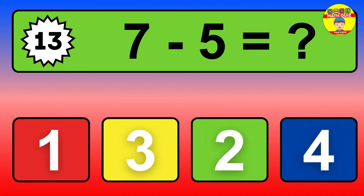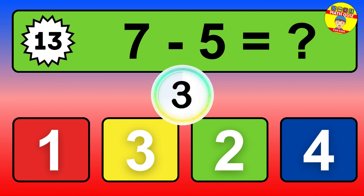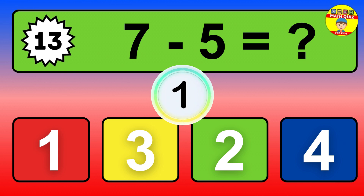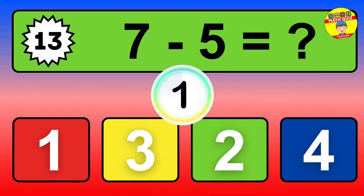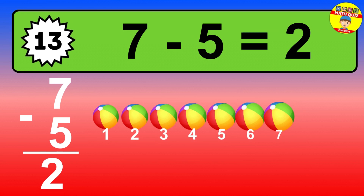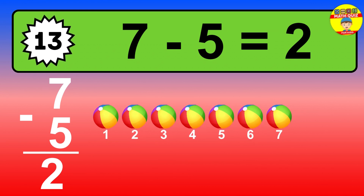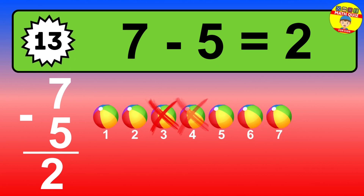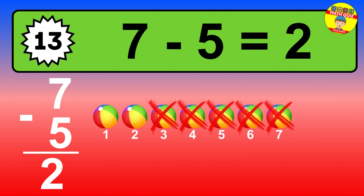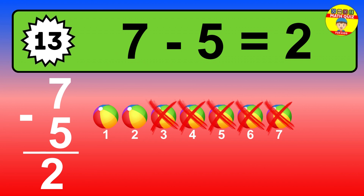Question 13. 7 minus 5 equals what? So the answer is 7 minus 5 is 2. Let's count it. 1, 2.